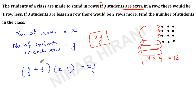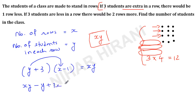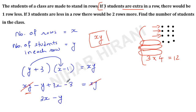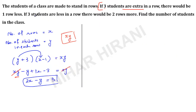So we write: (y + 3)(x − 1) = xy. Expanding: xy − y + 3x − 3 = xy. Cancelling xy from both sides, we are left with 3x minus y equals 3. This is equation number 1.